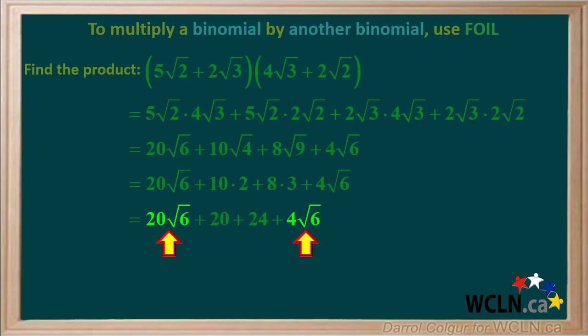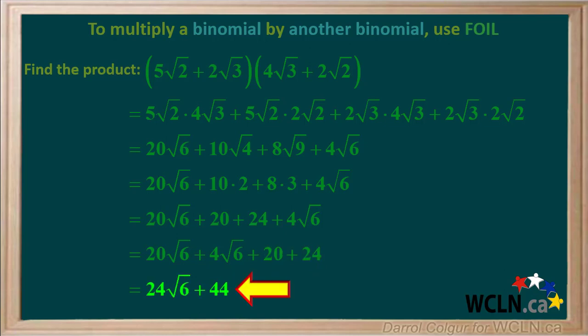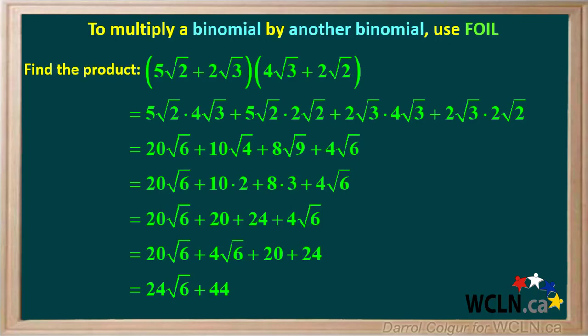20 root 6 and 4 root 6 are like terms, so we will put them side by side and add them. 20 root 6 plus 4 root 6 is equal to 24 root 6. And 20 plus 24 equals 44. So the final answer is 24 root 6 plus 44. Here is the entire example — you can pause the video and review the steps.